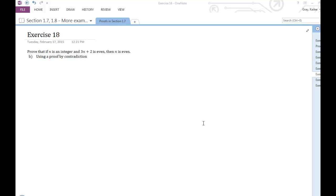We're going to take one more look at this statement: if 3n plus 2 is even, then n is even. And instead of the proof by contraposition like we did in the last video, we're now going to do a proof by contradiction.